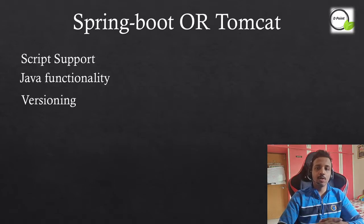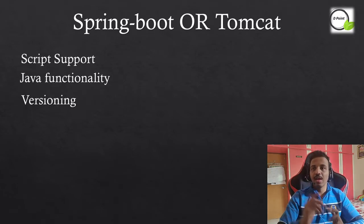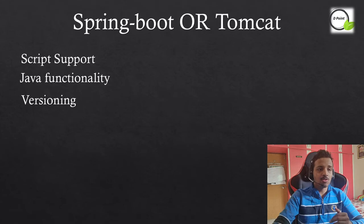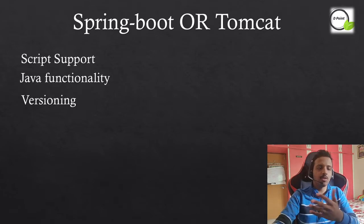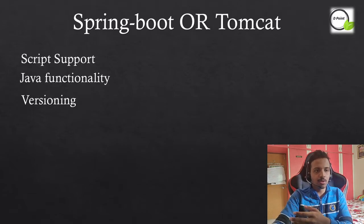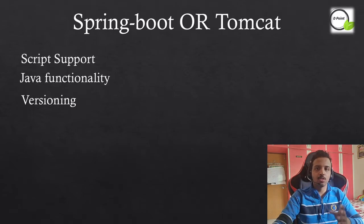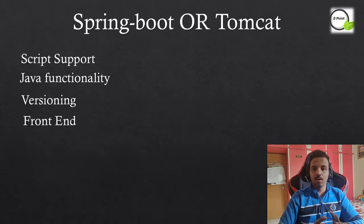The third point is versioning. You can upgrade versions in both Spring Boot and Tomcat. In Spring Boot, I simply go to my pom.xml and change the version — effort-wise it is very negligible. For Tomcat, I need to get the jar and paste it in the proper library folder. In terms of versioning, I would prefer Spring Boot because I simply need to change the version, whereas in Tomcat I need to download the jar and place it in the lib folder manually.